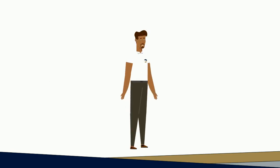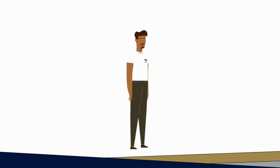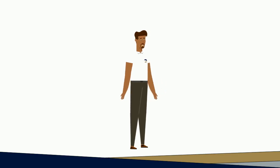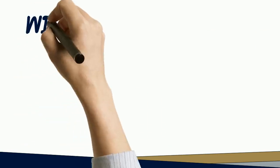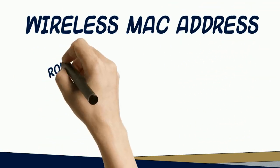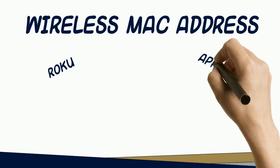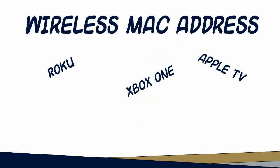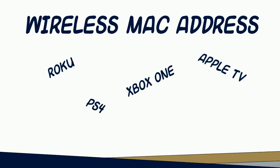The first thing you will need to do is find the wireless hardware address, or MAC address, of the device that you will be connecting to the campus network. This is a unique address that sets it apart from all other devices and is used to identify your specific device. Remember, you're looking for the wireless MAC address. Each manufacturer has a procedure for locating the wireless MAC address, so please consult the user manual of your specific device to find out how to locate it.